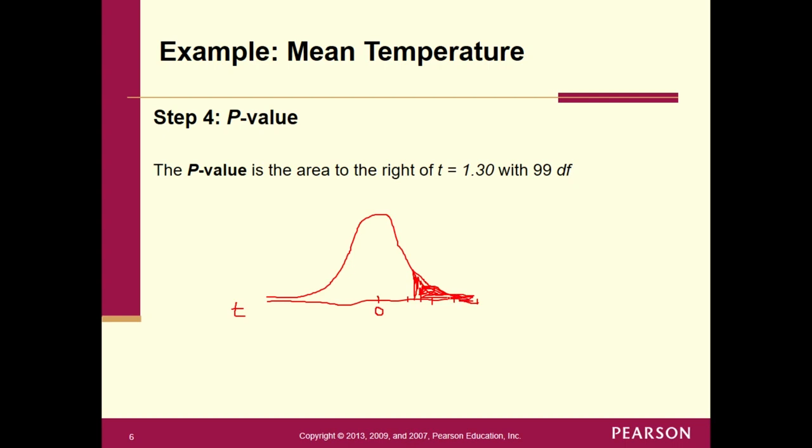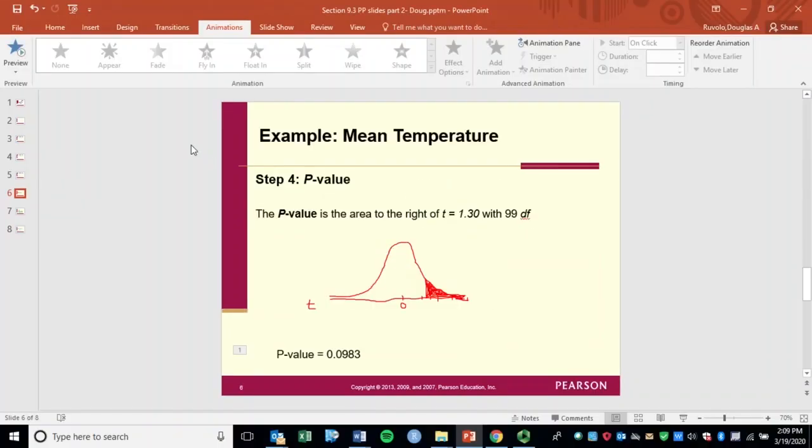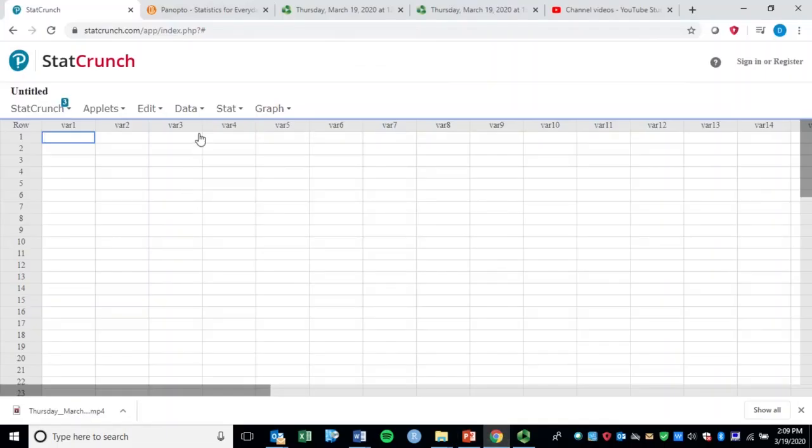And again, we don't have, we can't look on our t-table. It's not precise enough to give us our p-value. And so what are we gonna do? We're gonna go to StatCrunch now. For homework, you're gonna have to go to StatCrunch to do this. For an exam, we would just give you the p-value for this t-test. And rest assured that that's what's gonna happen. All right. So let's get out of this. And we'll go over to StatCrunch.